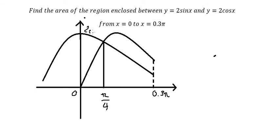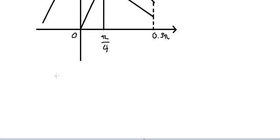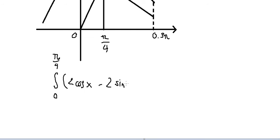This is about two cosine x and this is about two sine x. We know that two cosine x is greater than two sine x from 0 to π over 4, but from π over 4 to 0.3π, two sine x is greater than two cosine x. So we have two integrals. The first one is from 0 to π over 4 of two cosine x minus two sine x dx.